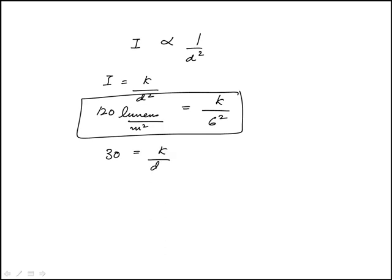So it would be k over d squared, or d squared is k over 30. So I need to find what k is, which is 6 squared times 120.